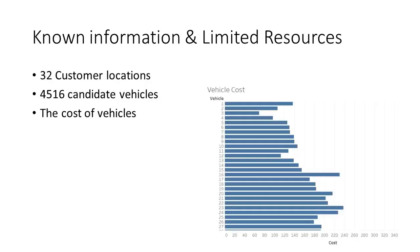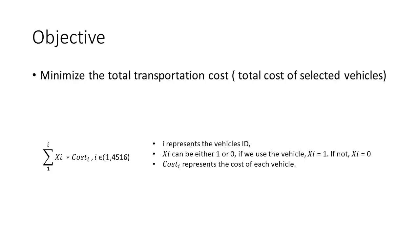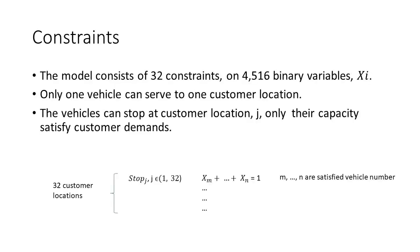In this example, we have 32 customer locations. We have 4,516 vehicles to select, and we know the cost of using each vehicle. Our objective is to make a transportation plan with the lowest total transportation cost. The constraint in this model is that only one vehicle can serve to one customer location.